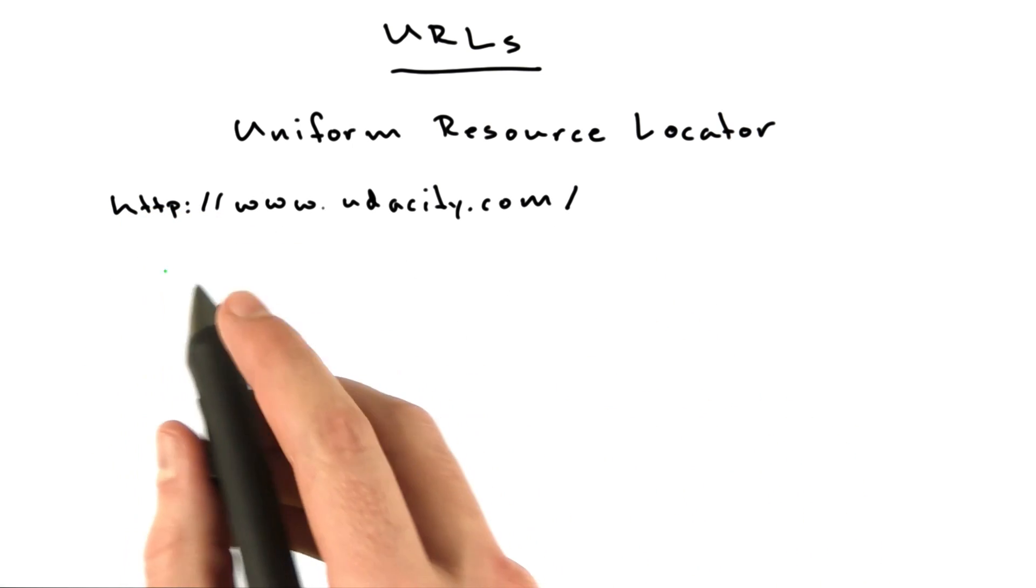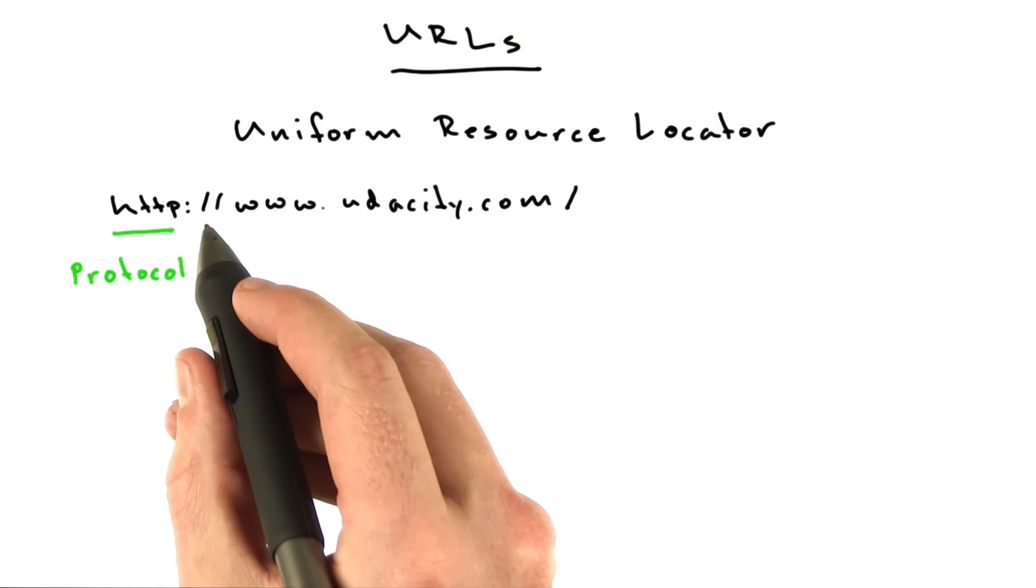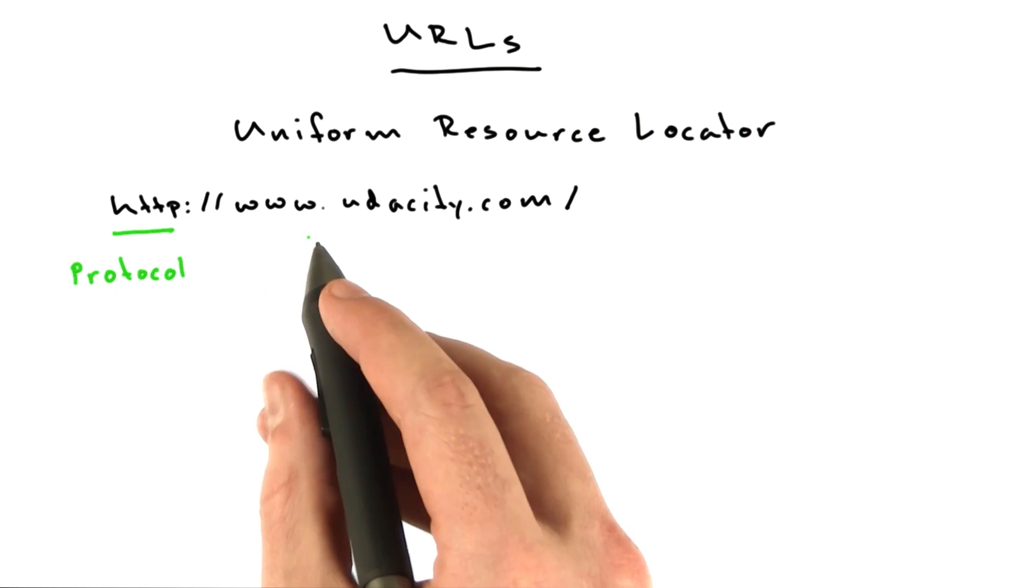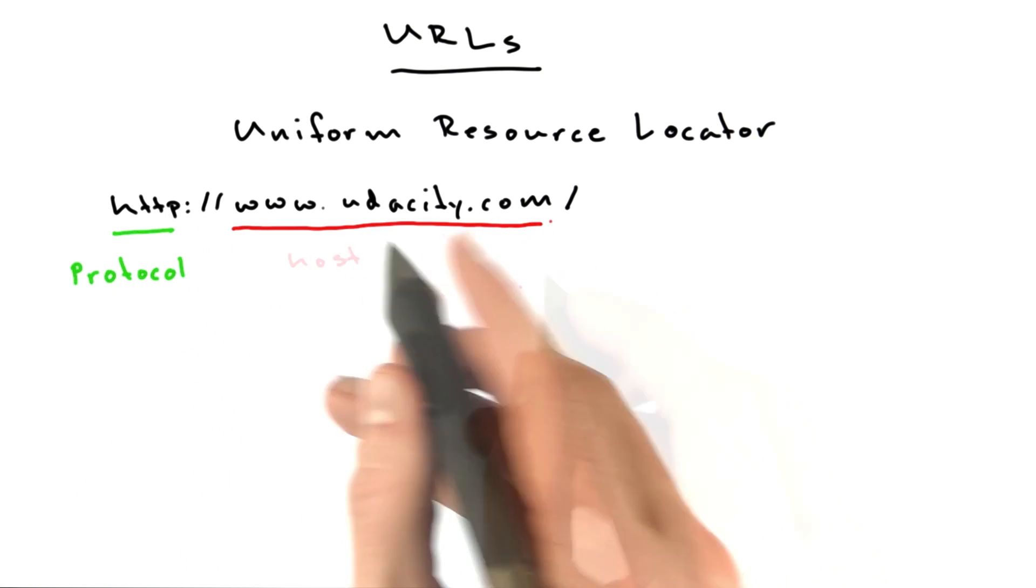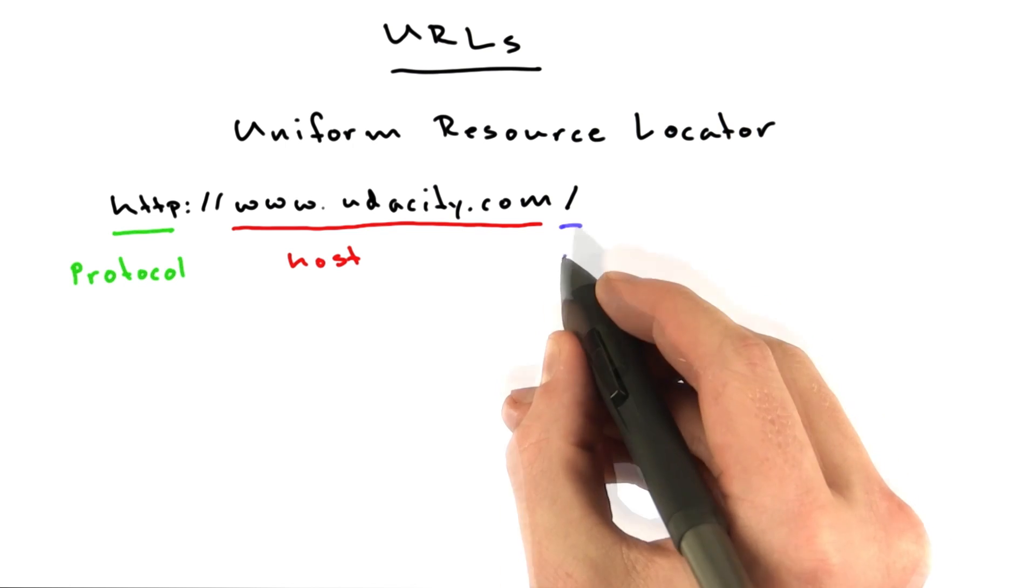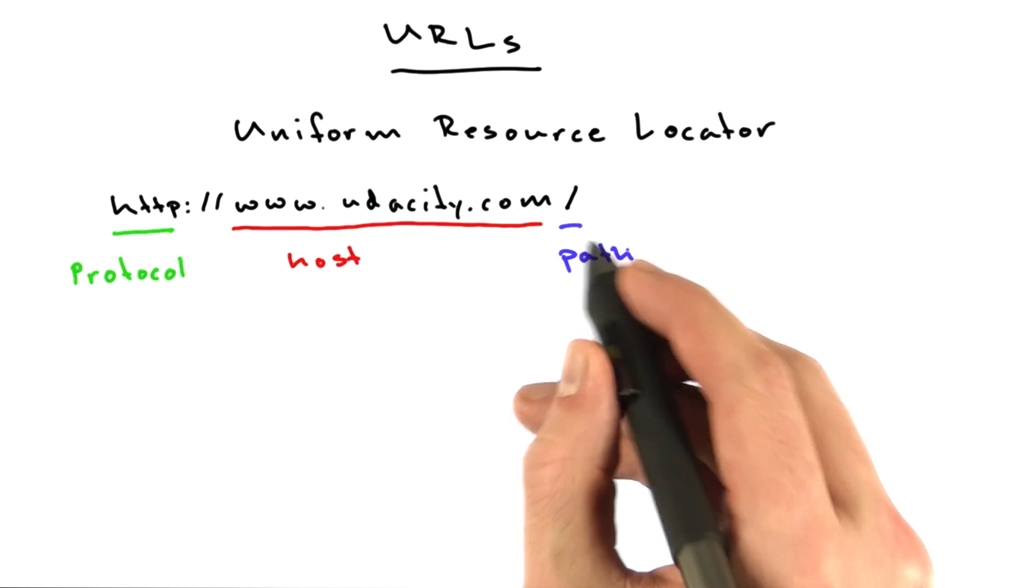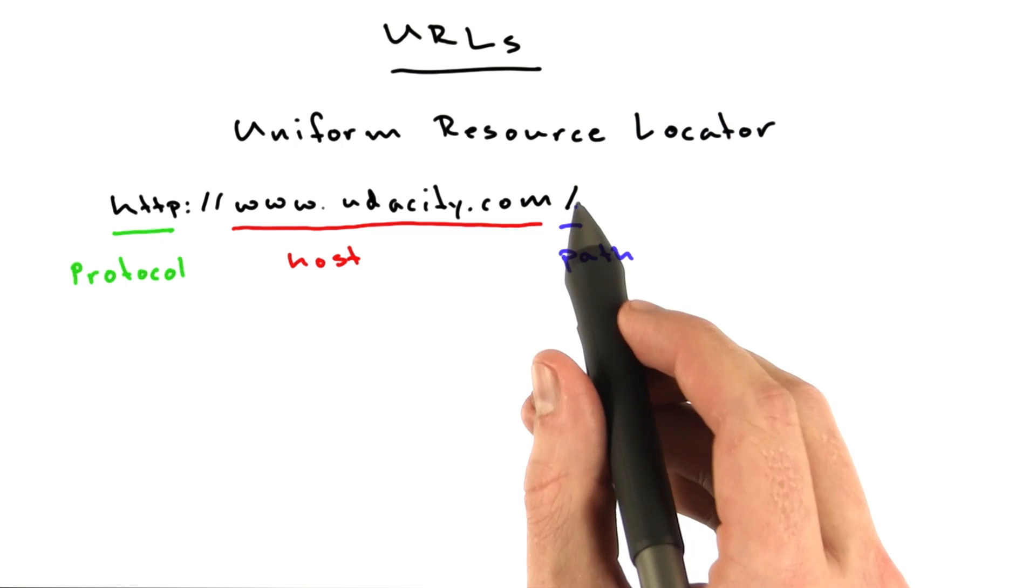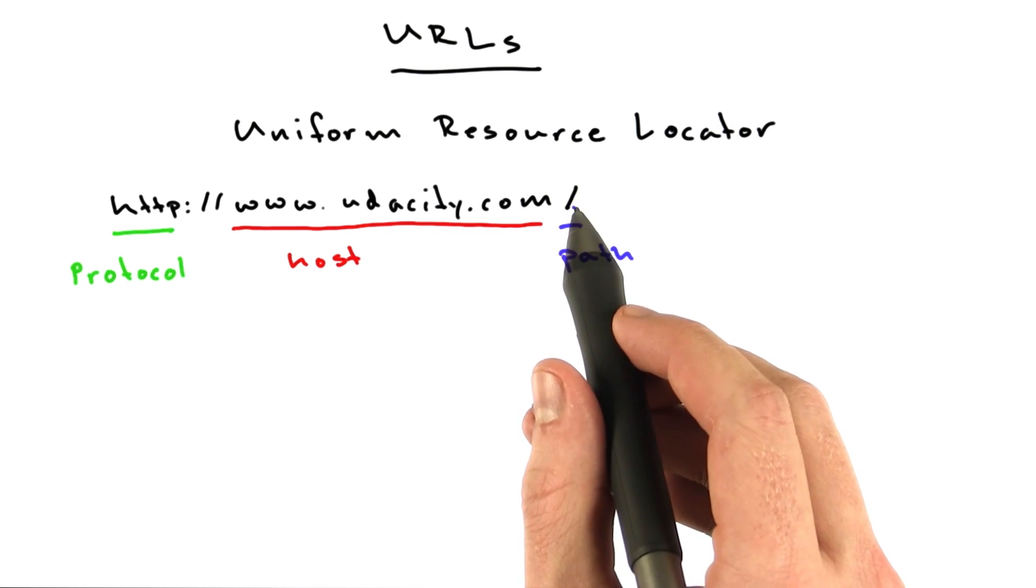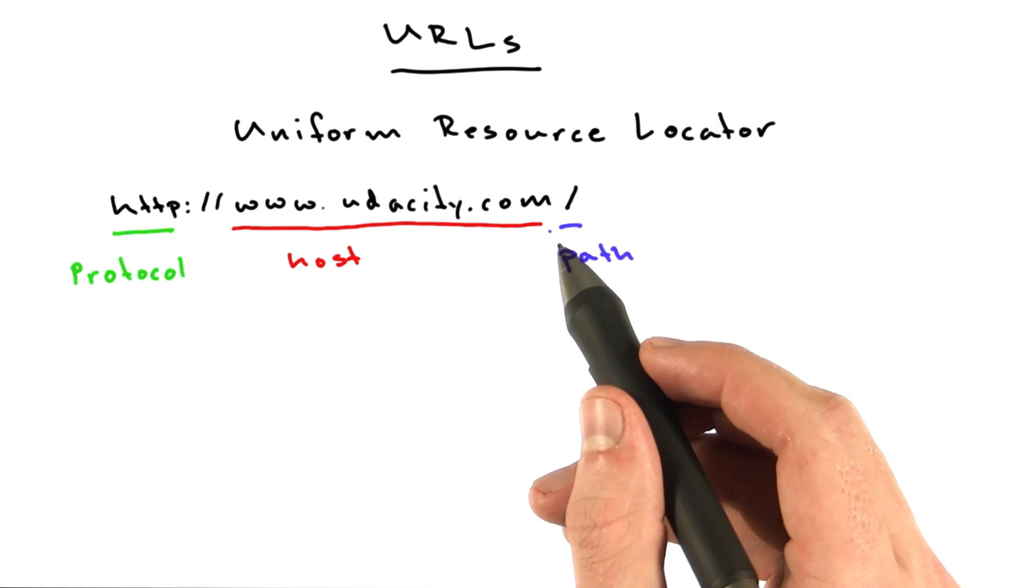It's got three main parts. It's got the protocol, separated by a colon and two slashes from the host, which precedes the path. And in this case, the path is just a slash. And if we didn't have that slash there, the path would still be a slash because that's the minimum path.